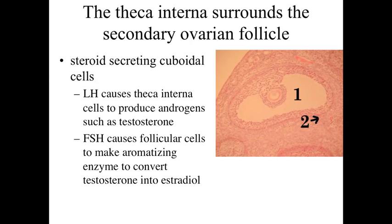The theca is actually going to break into two distinct regions — the theca interna and the theca externa, a more connective tissue region outside of that. The theca interna is going to be an important structure because we're going to have these cells differentiate into steroid-secreting cuboidal cells. LH — that luteinizing hormone — is going to trigger these theca interna cells to produce androgens such as testosterone. Then FSH, still present at somewhat lower levels, is going to cause these follicular cells to make an aromatizing enzyme — basically an enzyme able to convert the testosterone being produced into estradiol. So we're going to produce androgen, but that androgen is going to be short-lived because it's going to be converted into estradiol, which is going to signal that we've got maturation of the ovarian follicle and trigger changes within the uterine wall.